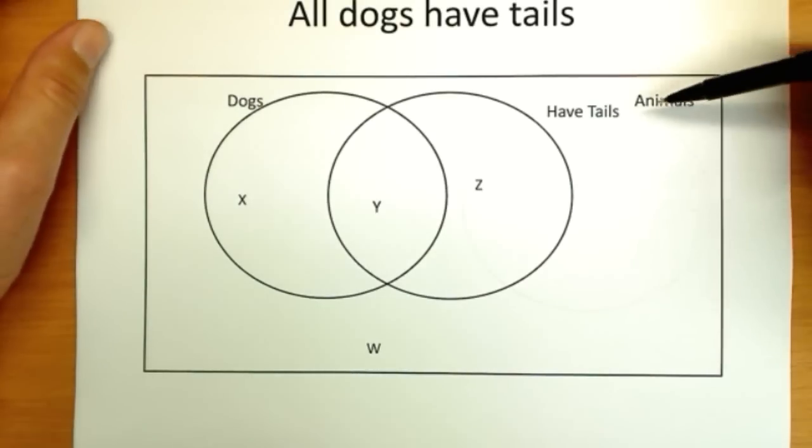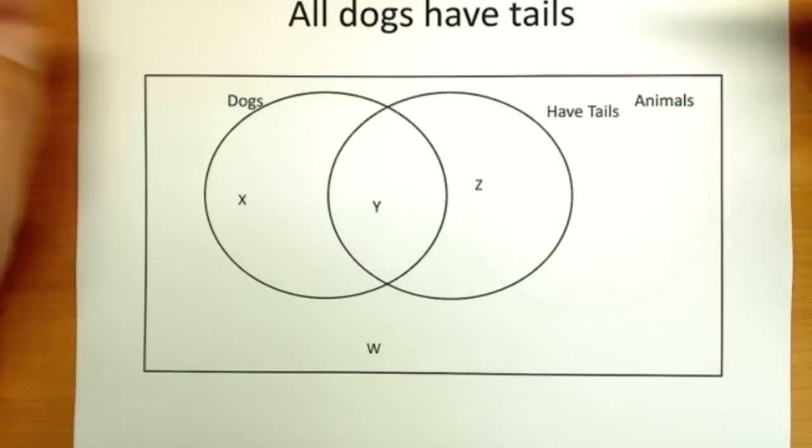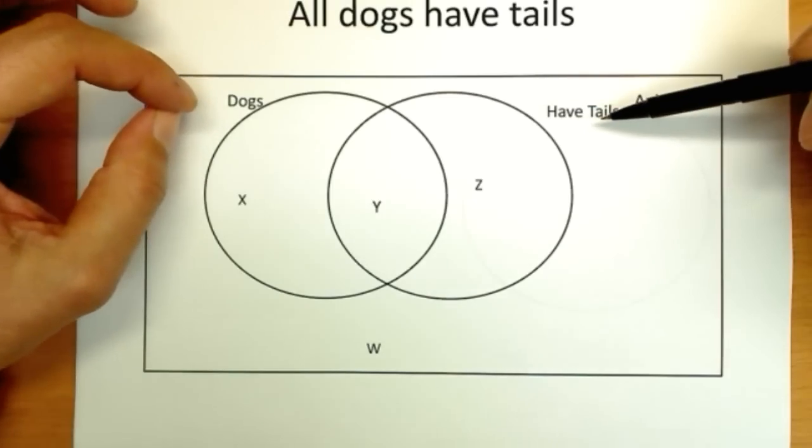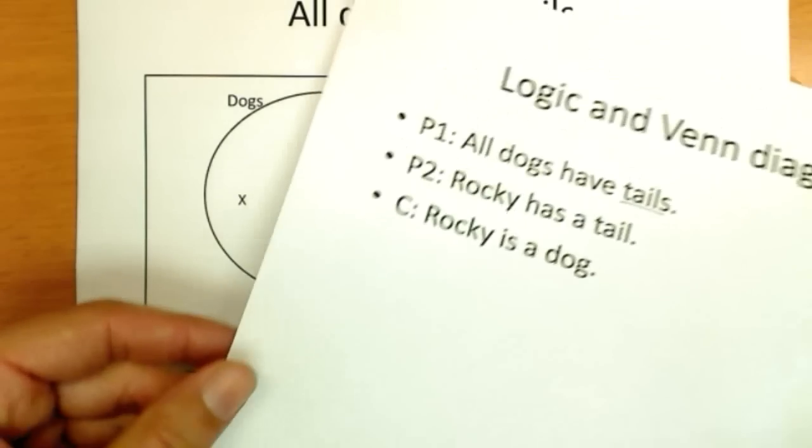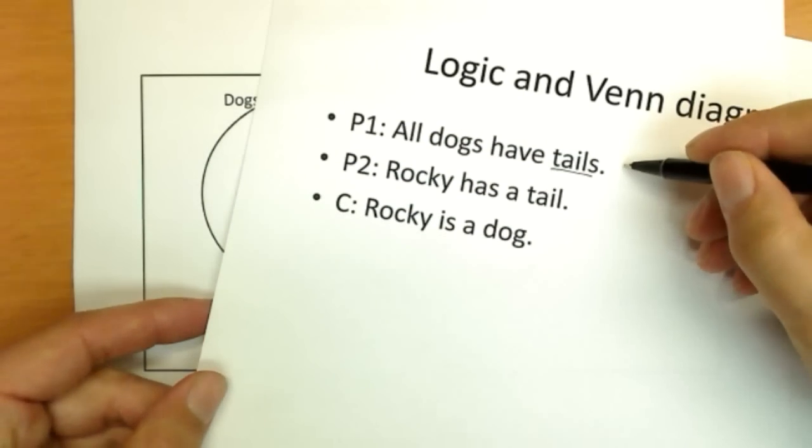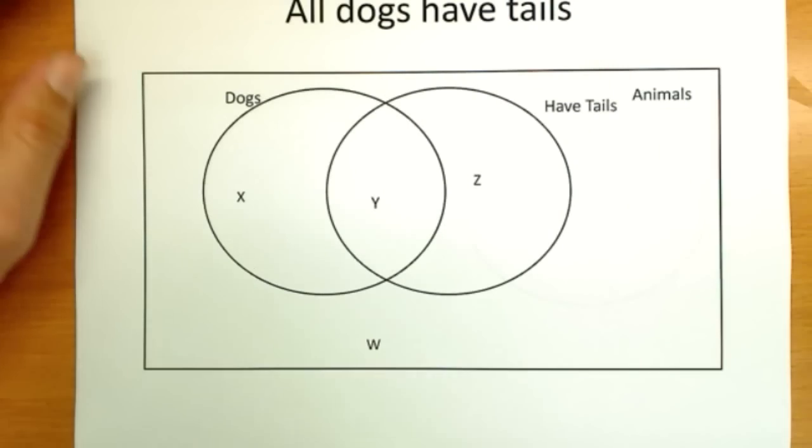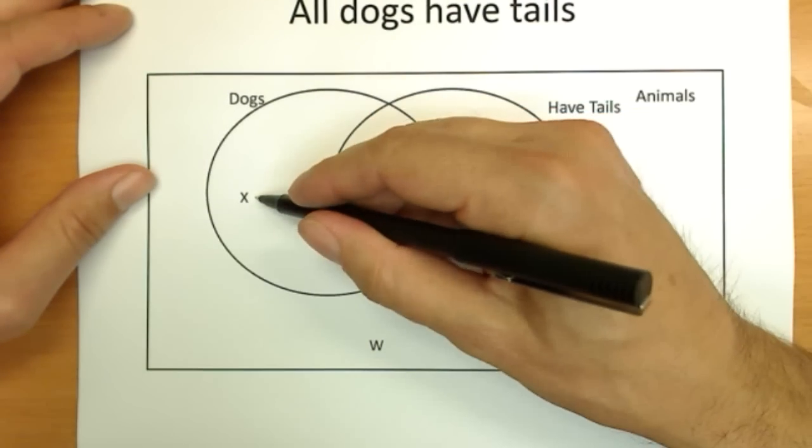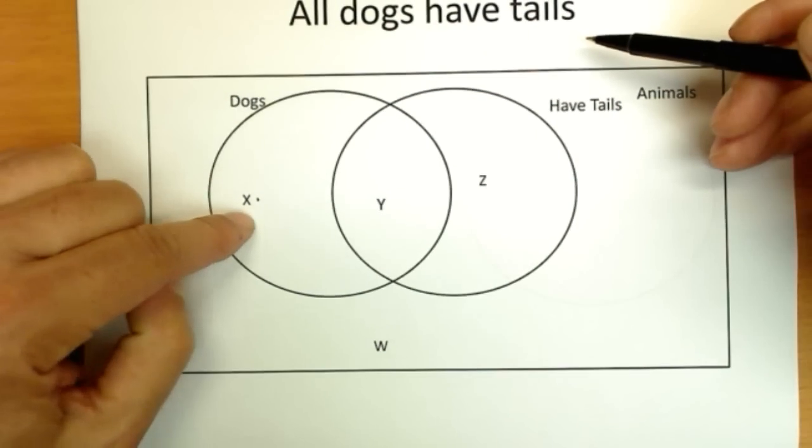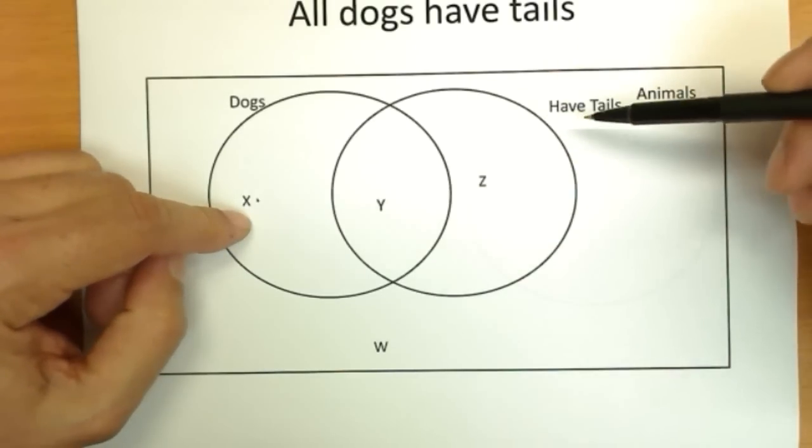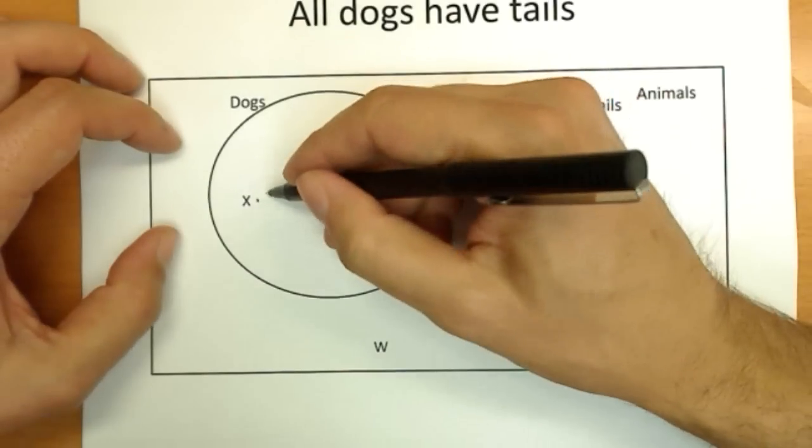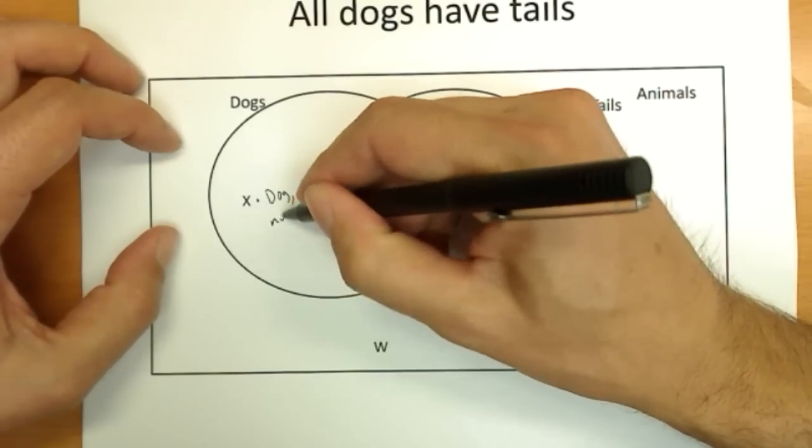Maybe someone will draw a picture like this. So we have all animals in the world, we have dogs, and we have things that have tails. Well, let's take a look at this picture and see if this is a possible picture of our world. Premise one said that all dogs have tails. So this is very important. Is this going to agree with what we have? So what would X be in this picture? Well, it's certainly a dog. It's inside the dog circle. But it doesn't have a tail. It's outside of the tail circle. So this is a dog with no tail.